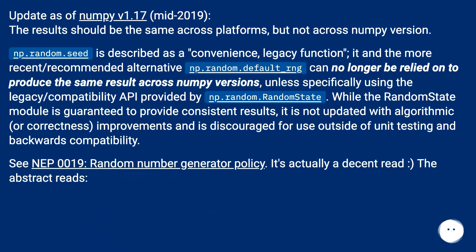Update for numpy version 1.17, mid-2019: the results should be the same across platforms, but not across numpy versions. np.random.seed is described as a convenience legacy function, and the more recent recommended alternative np.random.default_rng can no longer be relied on to produce the same result across numpy versions, unless specifically using the legacy compatibility API provided by np.random.RandomState.